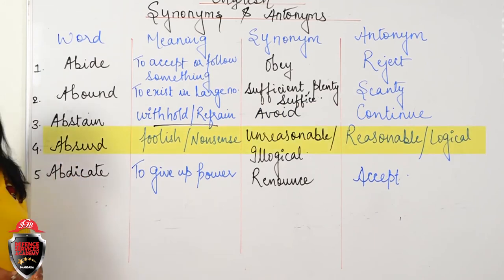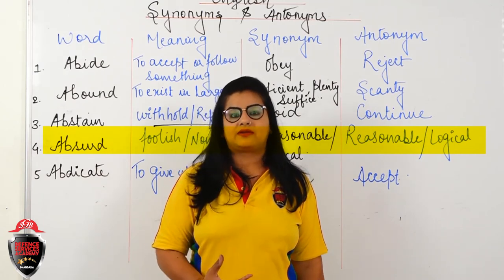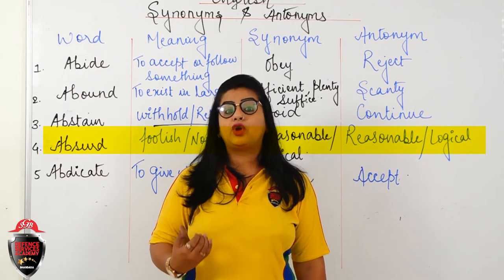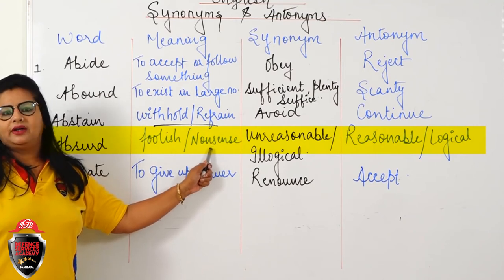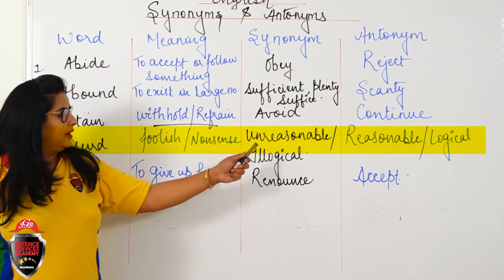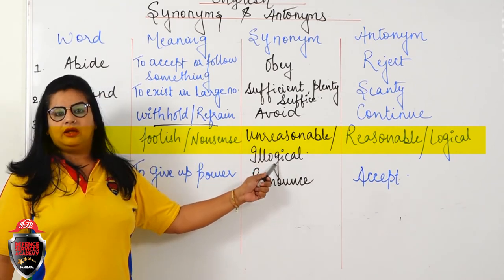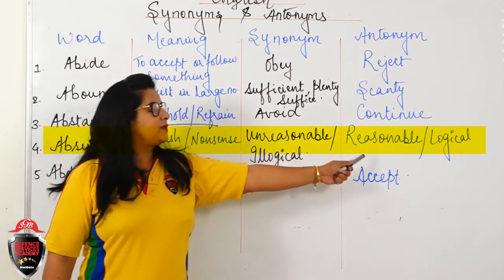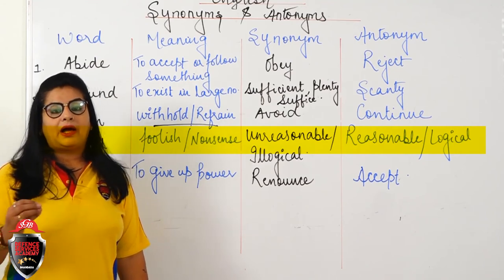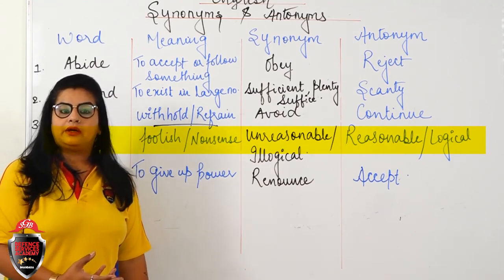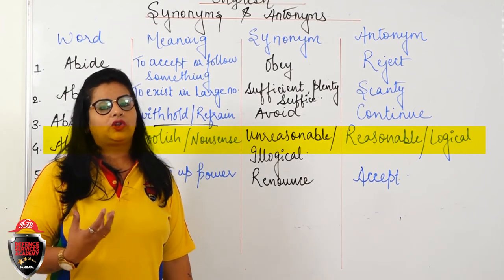Next word: Absurd. You must have used this word in daily language — 'he always speaks absurd,' 'what an absurd idea.' Absurd means bakwas, useless, unreasonable, illogical, nonsense — something you cannot accept or follow. Synonyms: Foolish, Nonsense, Weird, Unreasonable, Illogical. Antonym: Reasonable or Logical. Usage: 'Stop talking absurd.' 'Don't give this absurd idea.'